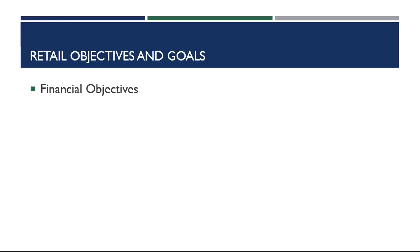Obviously, retailers have financial objectives. For most retail entrepreneurs, they want to make money. The most appropriate financial performance measure for retailers is ROA, or return on assets. We'll go into a lot of detail on ROA this chapter, but let me give you a brief example to explain why ROA is so important.